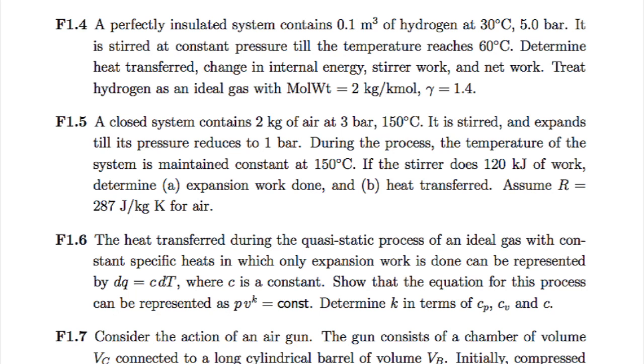F1.6 is a general case of PV raised to gamma equals constant for a certain type of adiabatic process. When you work through it completely, you will notice that an adiabatic process leading to PV^γ = constant is a very restricted case — a large number of conditions must be satisfied. The purpose of this exercise is to make you conscious of these conditions and to force you to derive them.